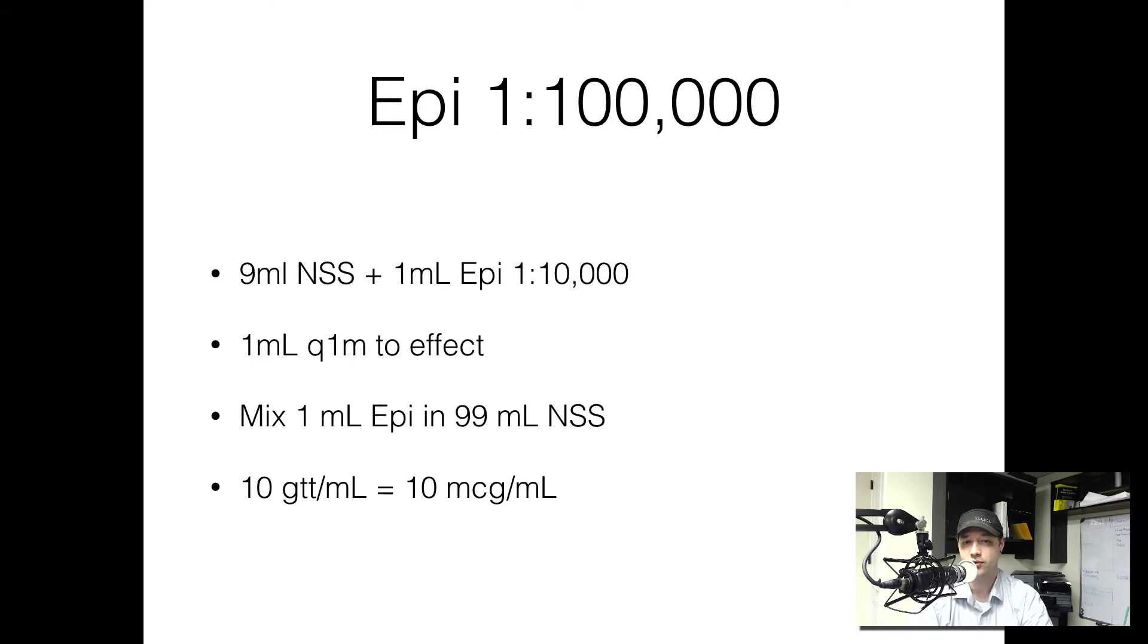If you want to run a drip, then we're going to take 1 mL of the epi 1 in 10,000, mix it in 99 milliliters of normal saline. So we have a 100 cc bag, draw out 1 cc, leaving 99 mLs. This is going to give you a concentration of 1 in 100,000 that is 10 drops per mL. This is going to be 10 mLs per milliliter. So, this is how we're going to mix this drug.